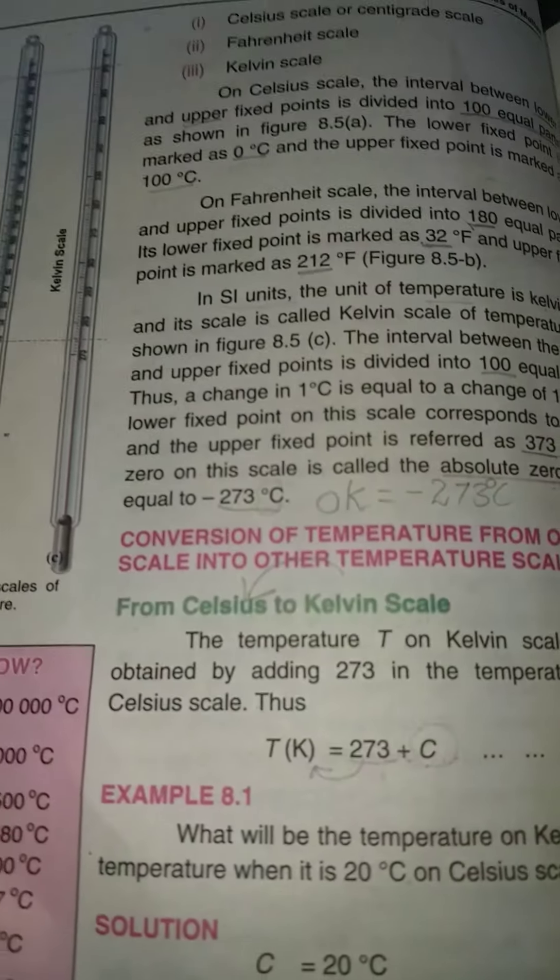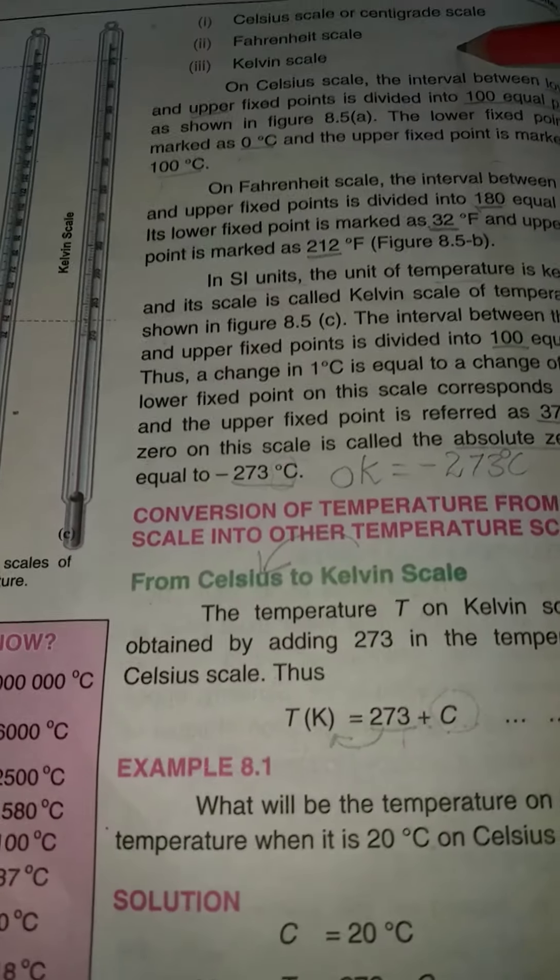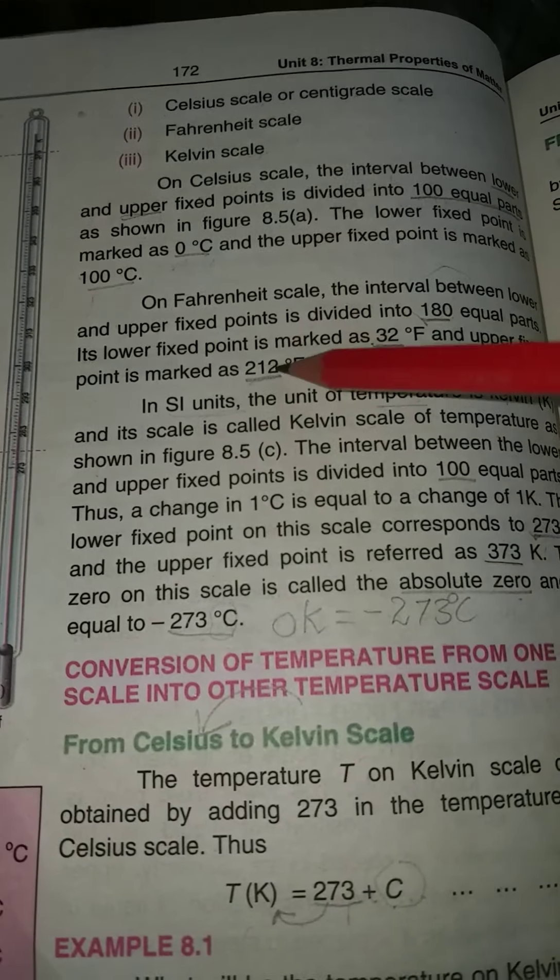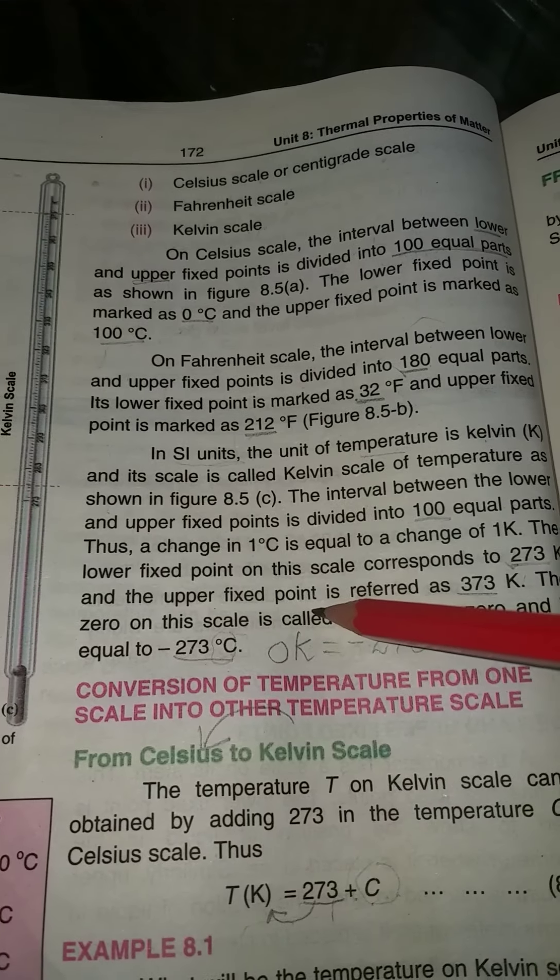Number one is Celsius Scale or Centigrade Scale. The second one is Fahrenheit Scale. The third one is Kelvin Scale. These three are different, and you can ask this difference.